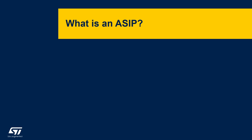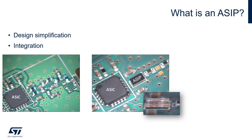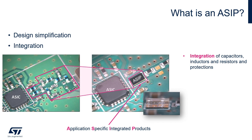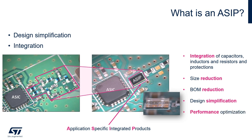What is an ASIP? The ASIP technology allows for the integration of passive and active devices into a single product. In other words, a lot of the small discrete devices that you can usually find around an ASIC can be integrated into an ASIP. The main benefits are an overall size reduction, a bump reduction, a design simplification, an optimization of the overall circuit performance, and a higher reliability thanks to the monolithic structure of the device.